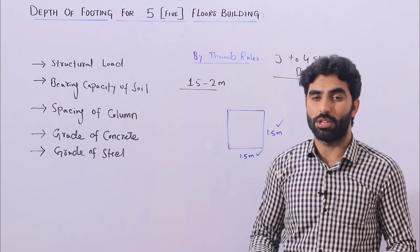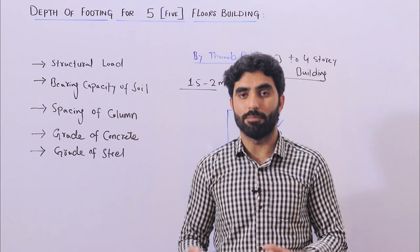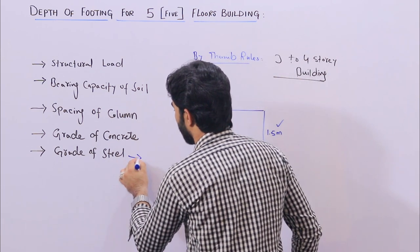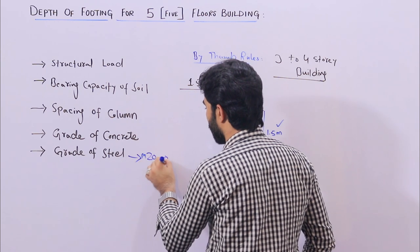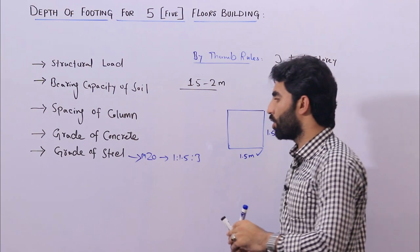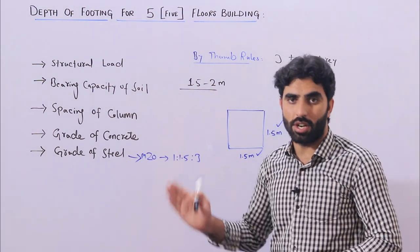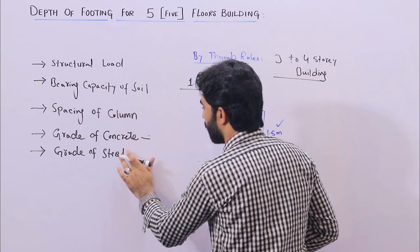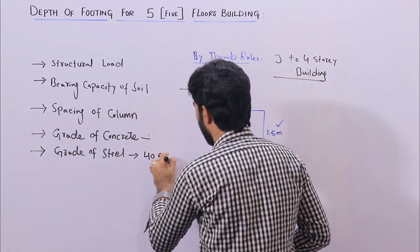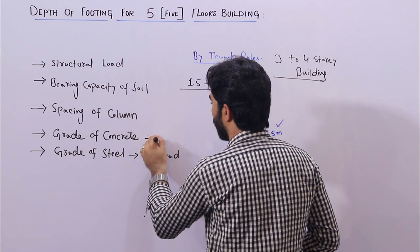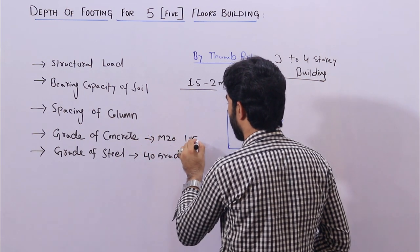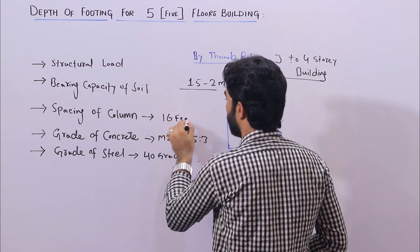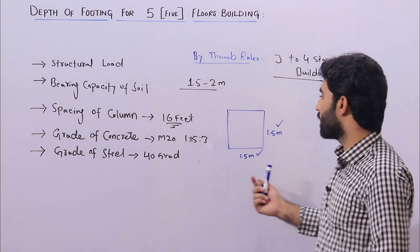Bearing capacity is very important for residential or commercial buildings to decide size of column, size of beam, size of footing, etc. For example, if you are using M20 grade concrete — which has a ratio of 1:1.5:3 — if you use M15 that is not better than M20. For grade of steel, if you are using 40 grade — we also have 60 grade — and with M20 concrete at ratio 1:1.5:3, if the spacing is more than 16 feet, we will also increase the size of column.